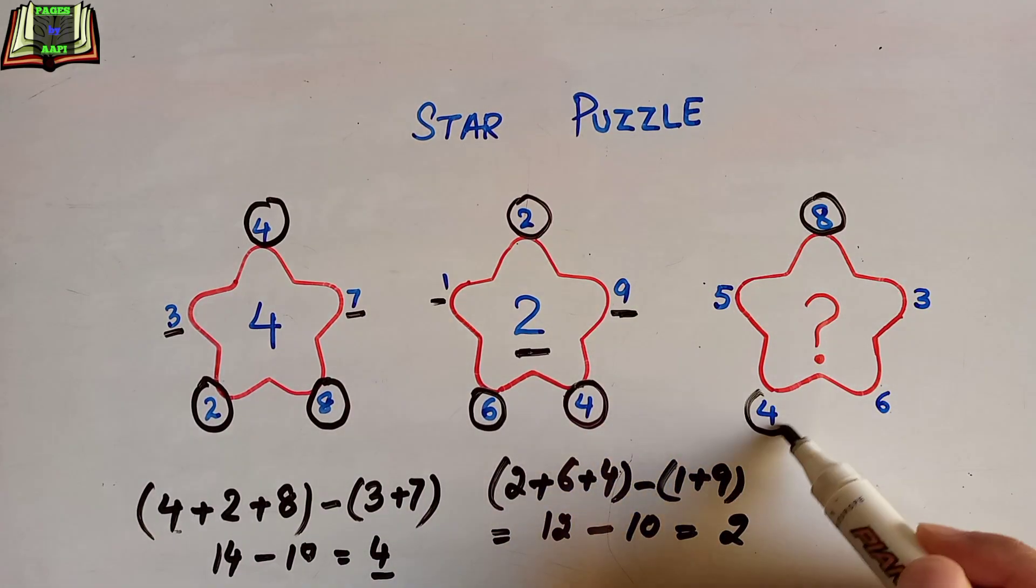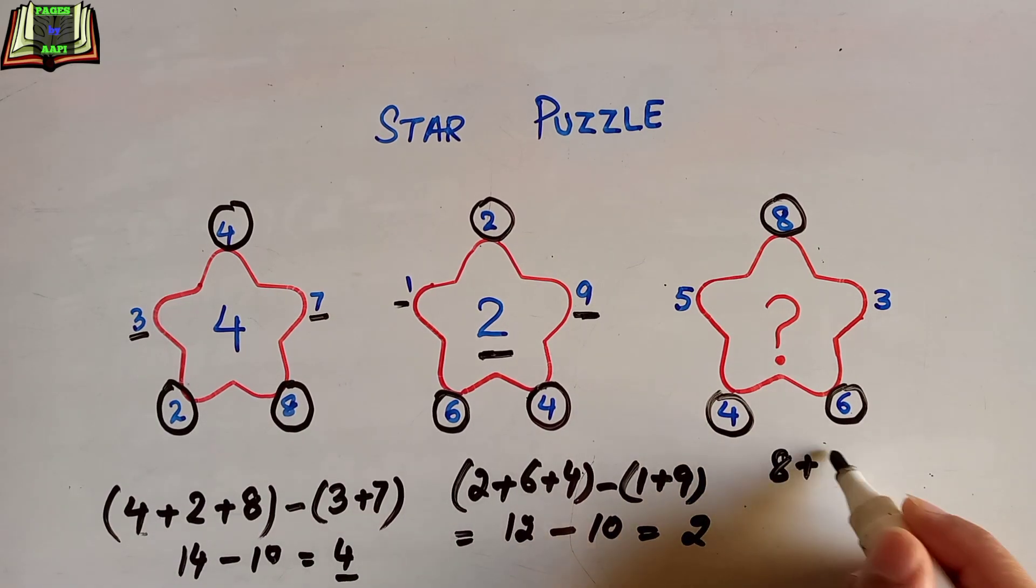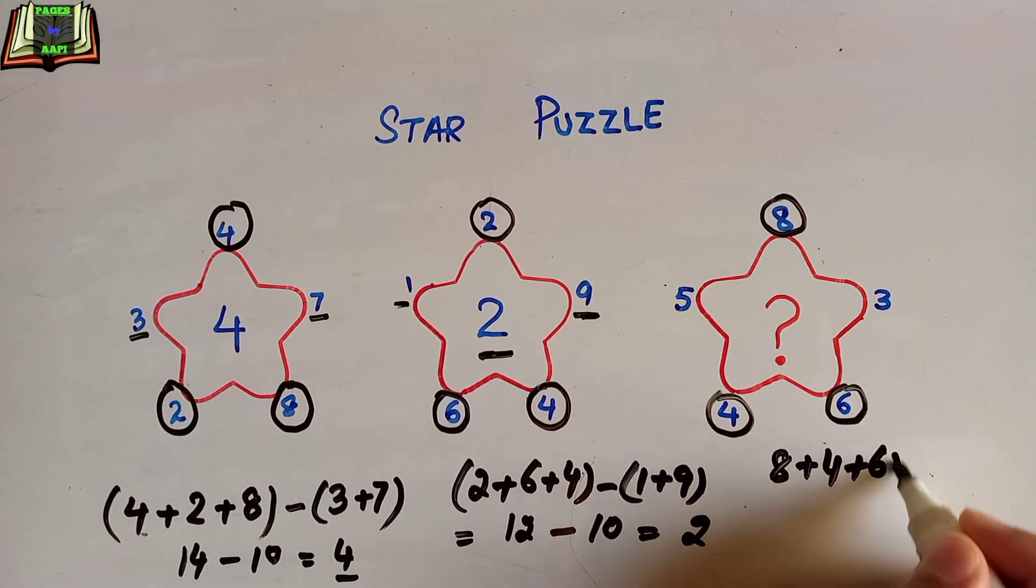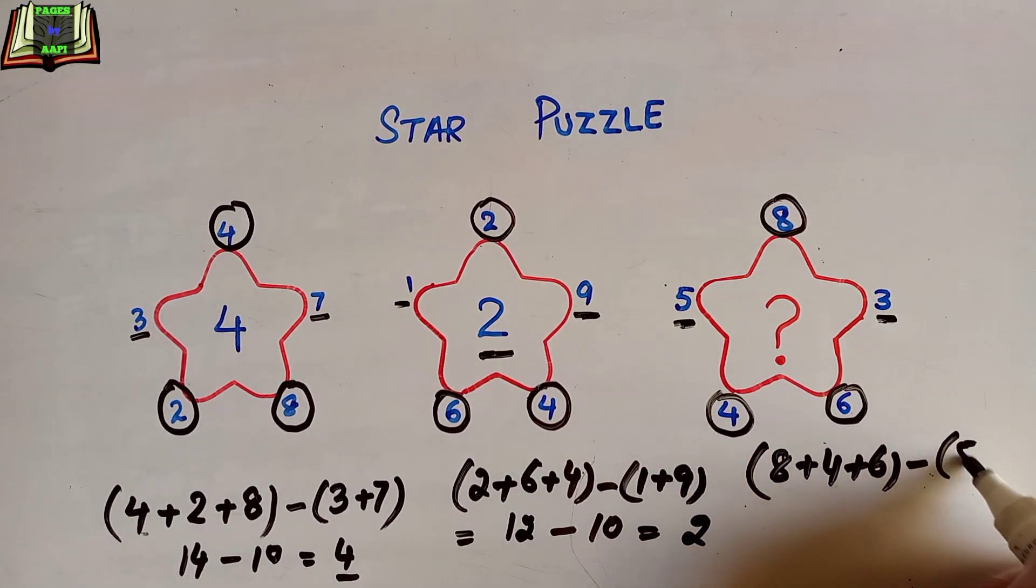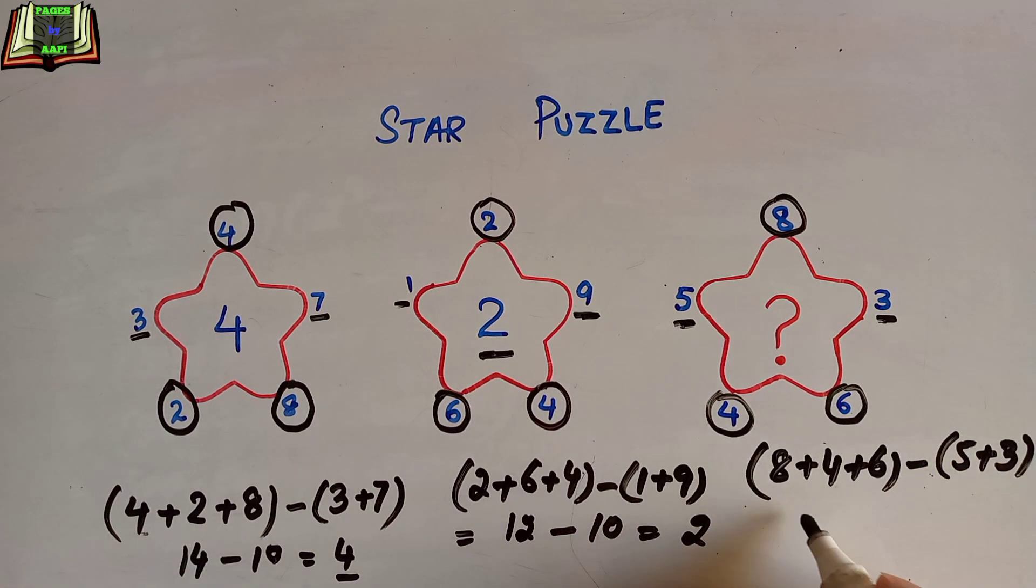These three numbers will be added and will come in parentheses, minus sign, then 5 and 3 will be added. Now let's solve: 8 and 4 is 12, and 6 is 18, minus 5 and 3 is 8, which equals 10.